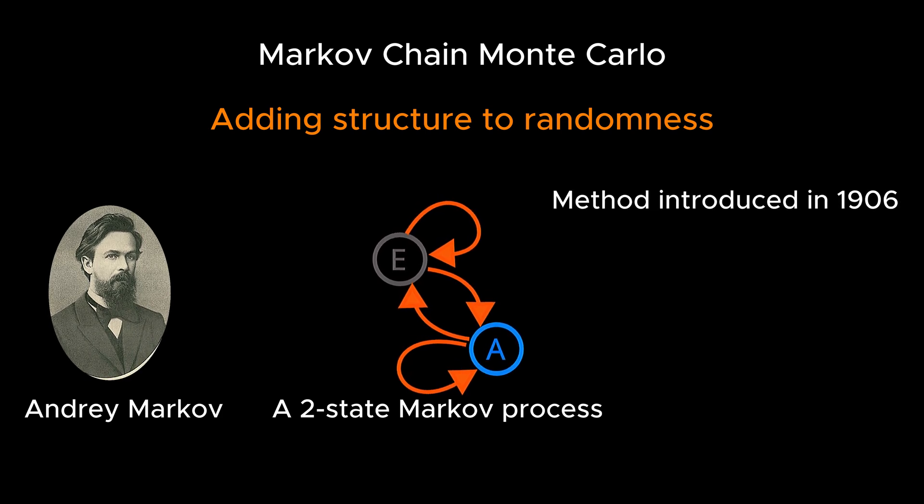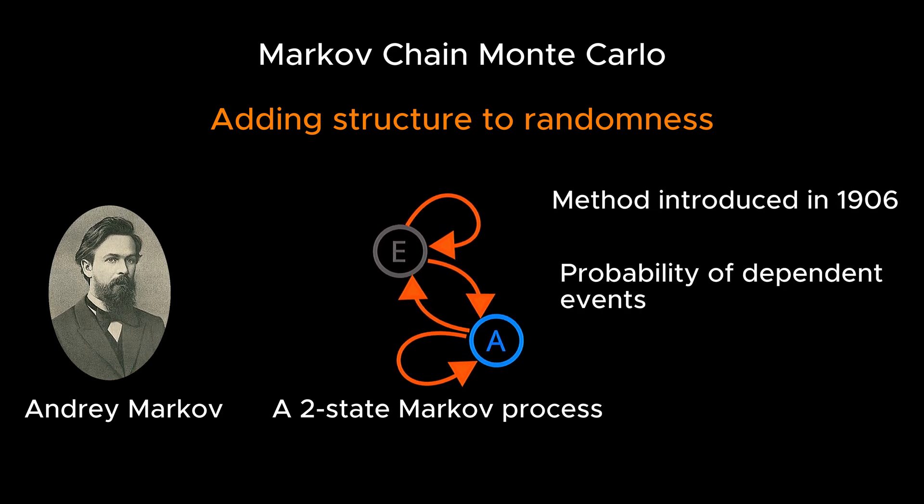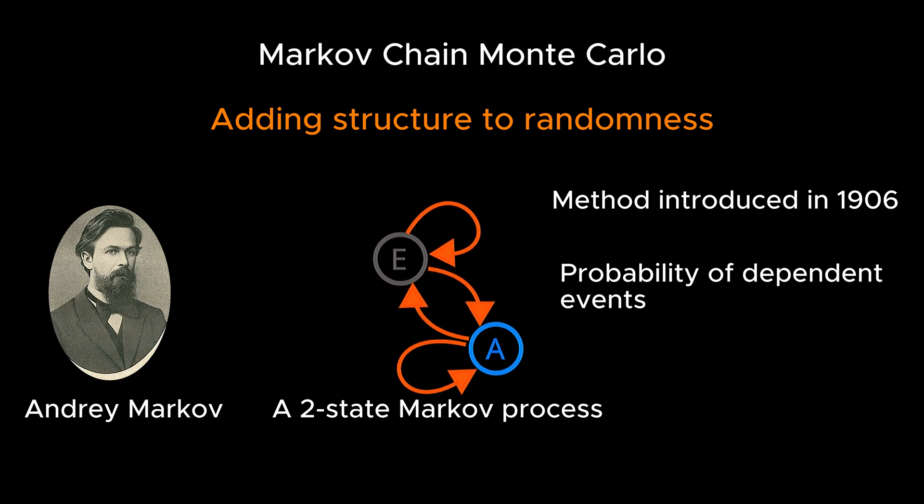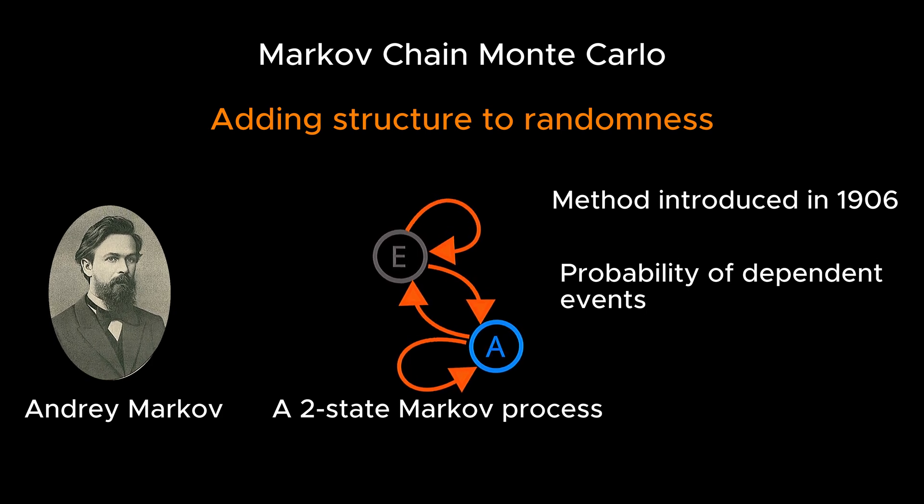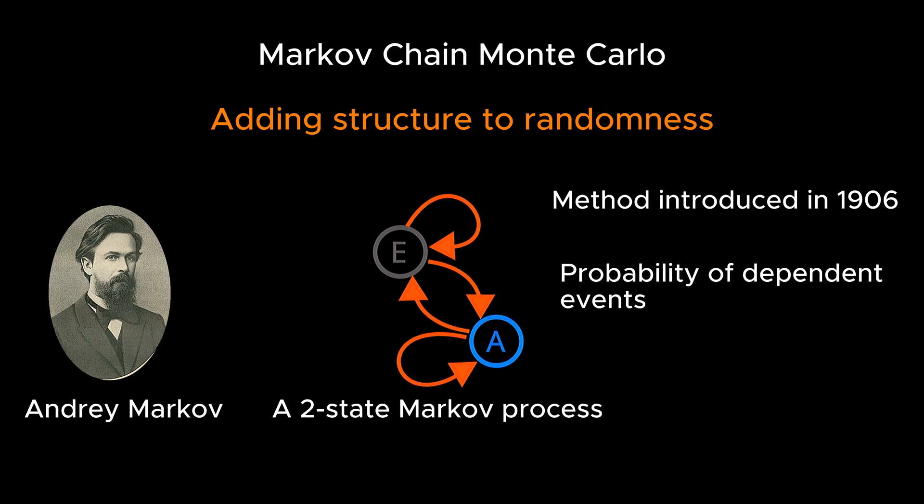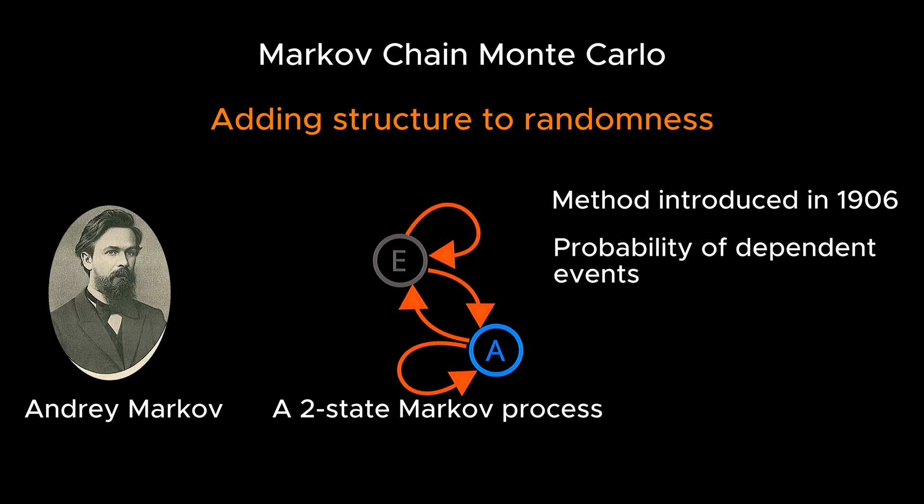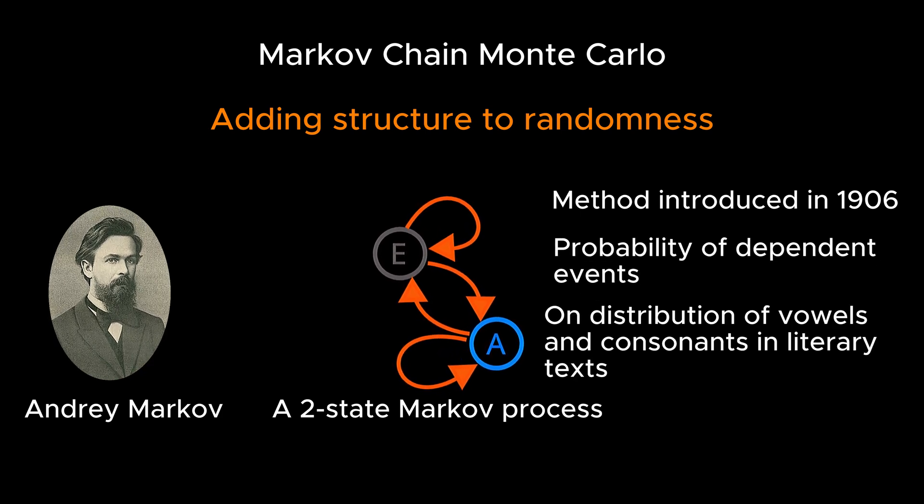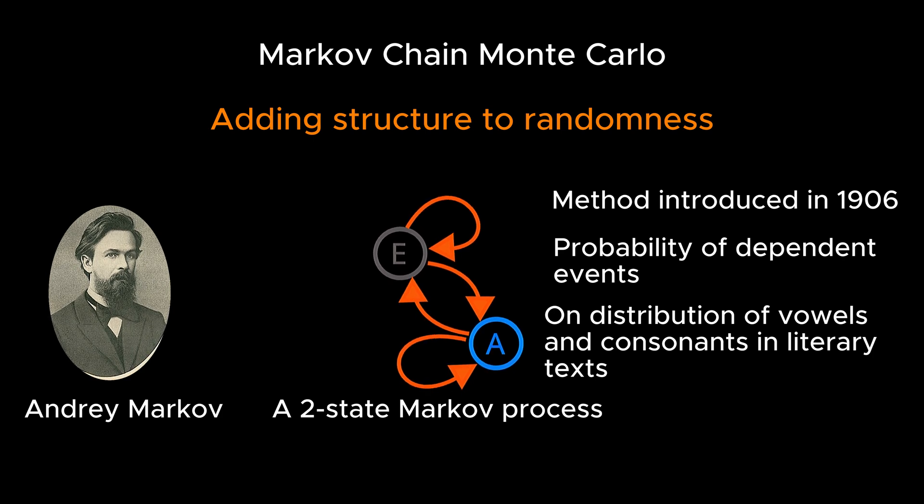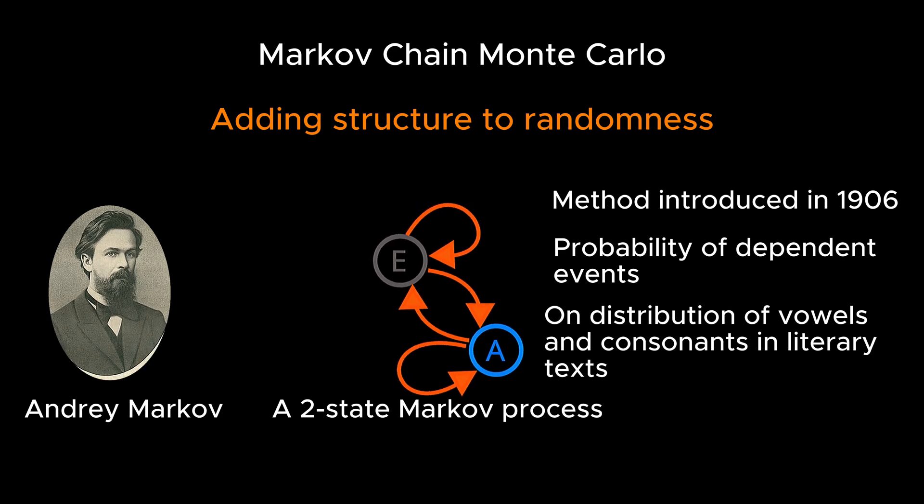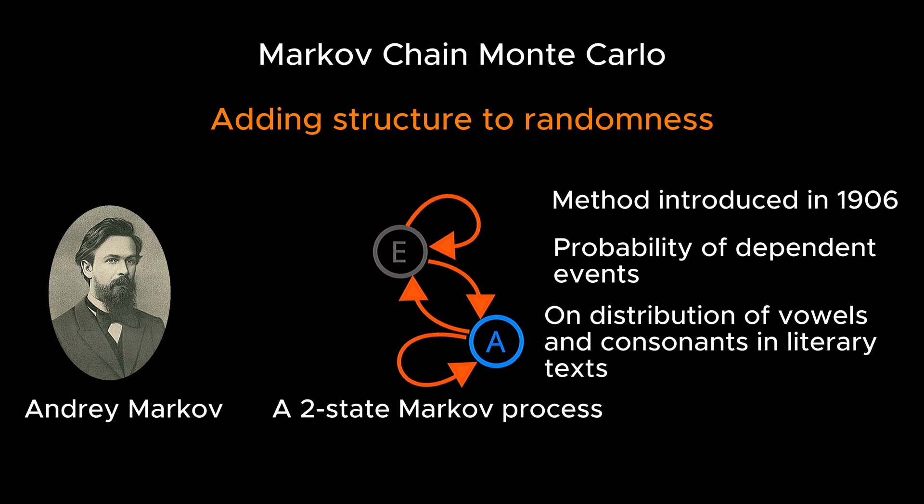His initial motivation was to extend probability theory to sequences of dependent events, as opposed to the then prevailing focus on independent events. Markov's interest in dependent sequences arose from his work on the distribution of vowels and consonants in literary texts, where he sought to determine whether their occurrence was independent or not.